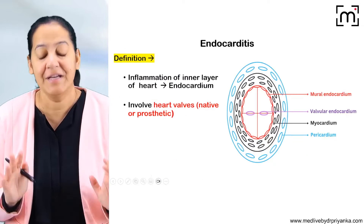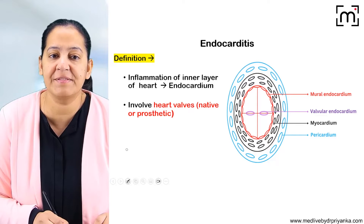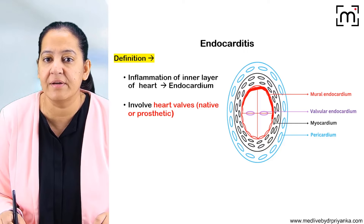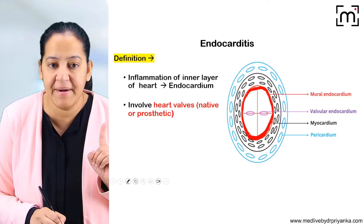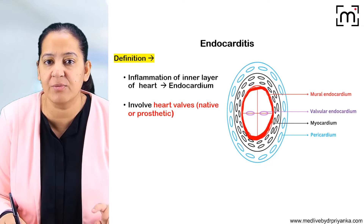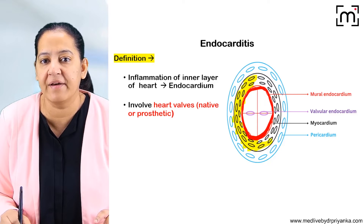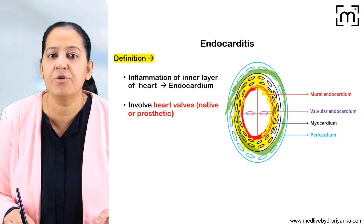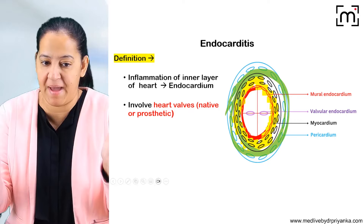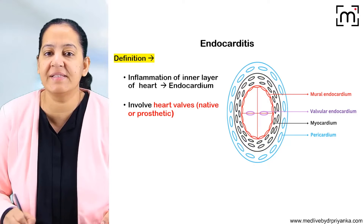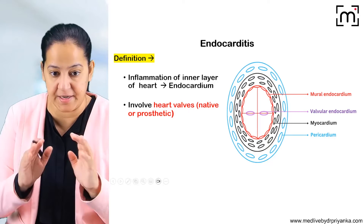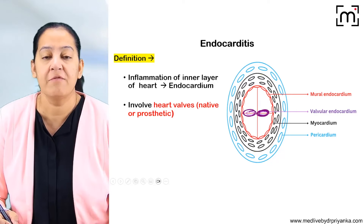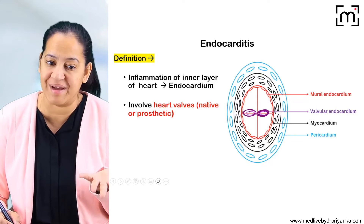Now let's start. Endocarditis — the human heart has three layers. The innermost layer is known as the endocardium. The middle layer is known as the myocardium. The outermost layer of the human heart is known as the pericardium. So the three layers are: endocardium, myocardium, pericardium — endo, myo, peri. Now please see the endocardium — it is the innermost layer. In the heart we have the walls; you can see the tricuspid wall and the mitral wall.